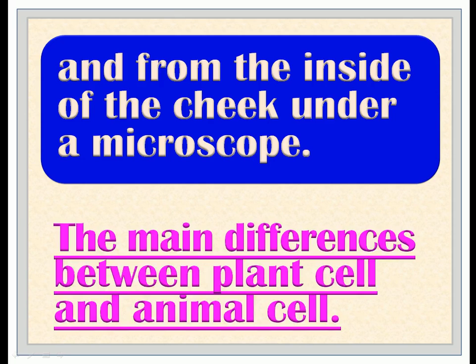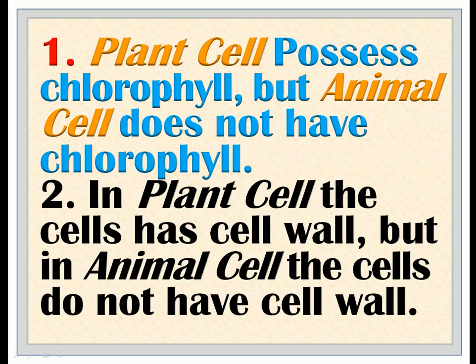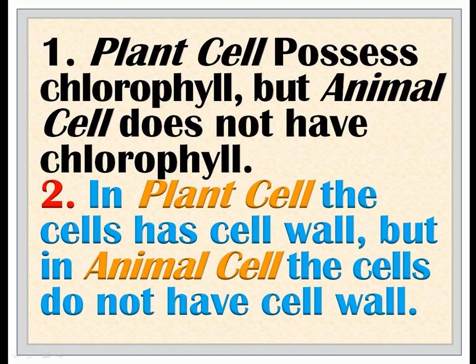The main differences between plant cell and animal cell: 1. Plant cell possesses chlorophyll, but animal cell does not have chlorophyll. 2. In plant cell, the cell has a cell wall, but in animal cell, the cells do not have a cell wall.